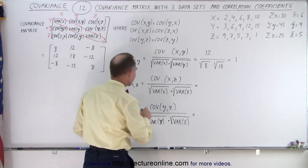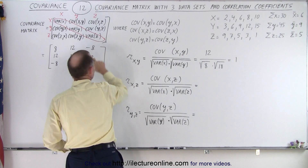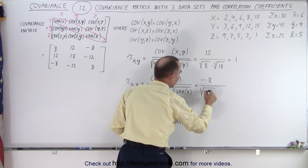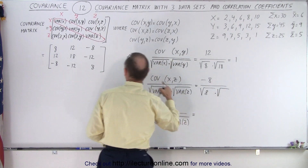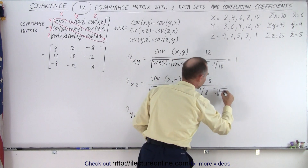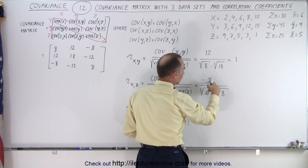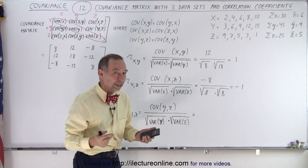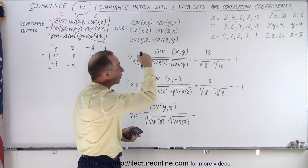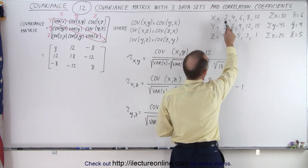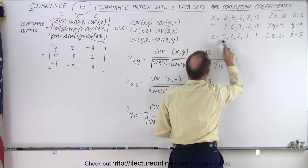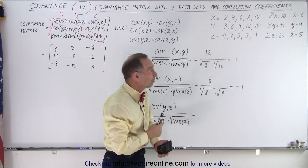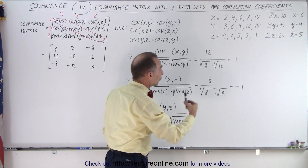Now let's take a look at our second calculation: the covariance of xz, which is negative 8, divided by the square root of the variance of x, which is 8, times the square root of the variance of z, which is 8. That gives us 8 goes into negative 8, which is equal to negative 1. There we have a situation where again there's perfect correlation, but one data set is increasing while the other data set is decreasing. This data set is increasing by 2, and this data set is decreasing by 2: 9, 7, 5, 3, 1. Therefore, again, that perfect correlation between the two, and we have a negative 1 correlation factor.